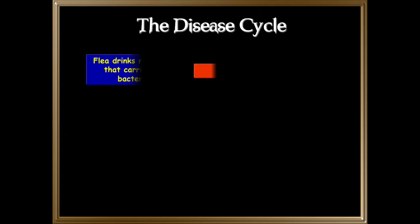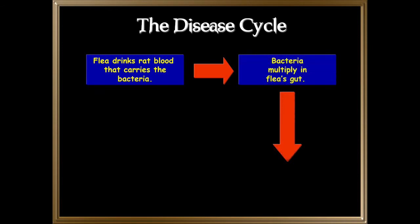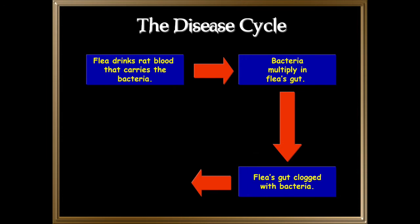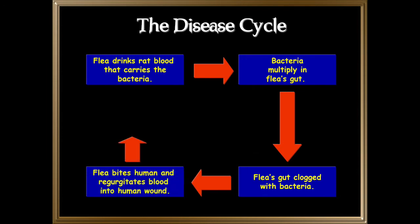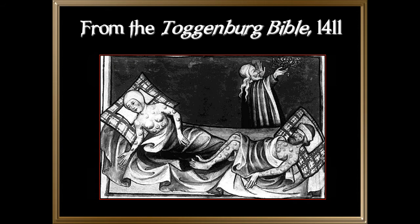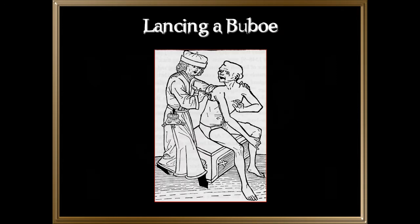The disease cycle started like this: the flea drinks rat blood that carries the bacteria, the bacteria multiply in the flea's gut, the flea's gut gets clogged with the bacteria, the flea bites a human and regurgitates blood into the wound, and the human is infected. This is an image from the Toggenberg Bible from 1411, showing a doctor lancing a bubo.